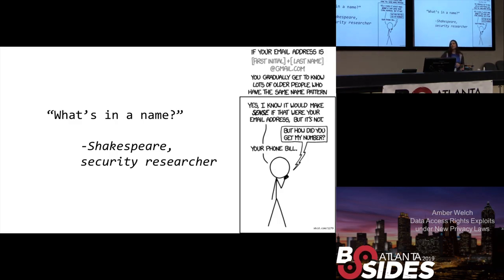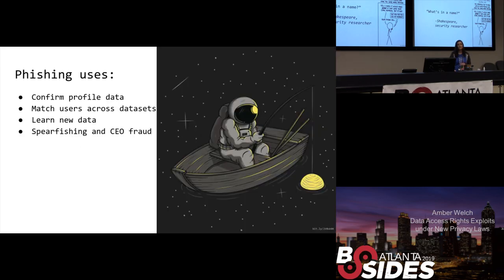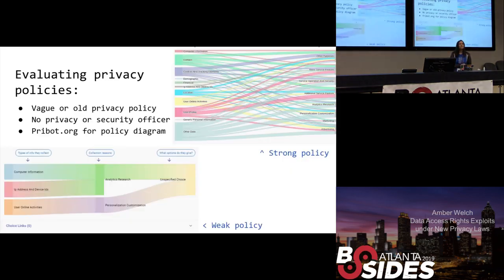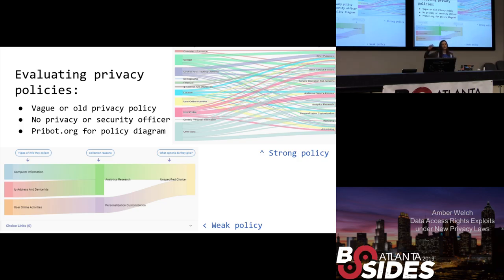The takeaway here is that a name is not really very important — the name of the data subject doesn't tell you much about whether that record is actually that person. What you can do with phishing is confirm profile data. This is an area where you can learn new information really easily, because you can guess at information and if you're correct, you've confirmed it. If you want to do some of this as an activity, or you're a pen tester wanting to see if this is an area where a target is weak, you can evaluate a privacy policy with a tool called pribot.org. It will intake a privacy policy and parse it into an alluvial diagram. A weak one flows into unspecified choice, which means they probably don't have many policies in place about how to deal with DSRs.